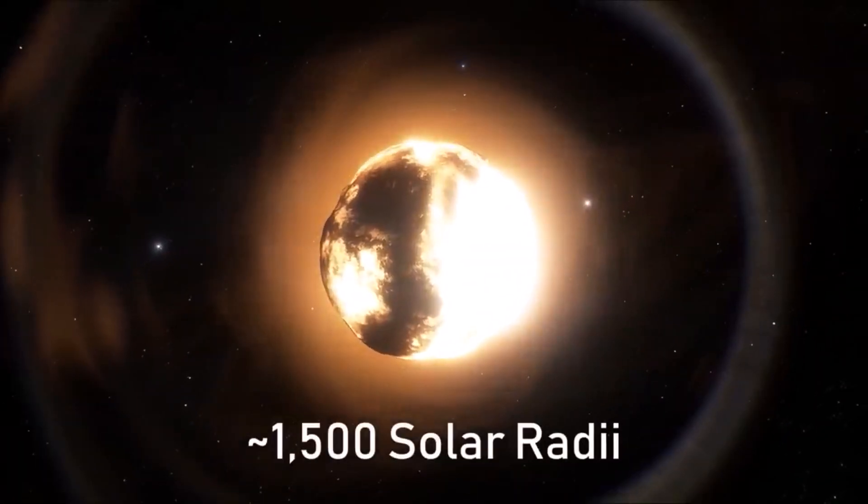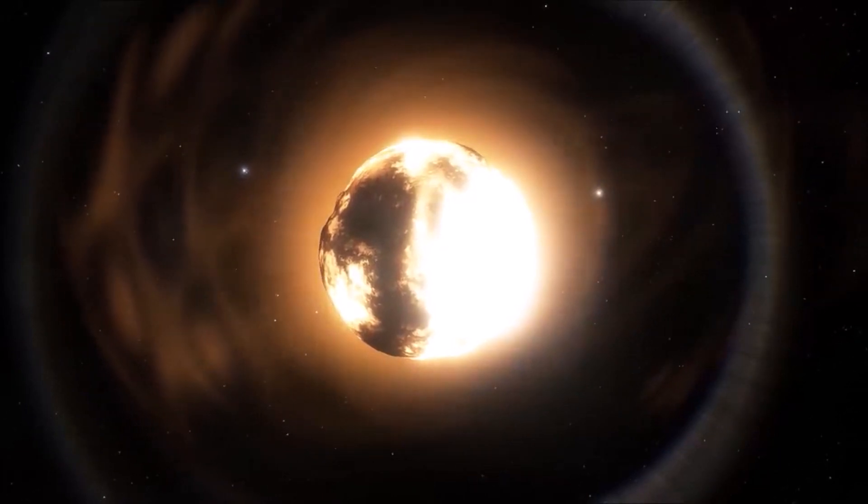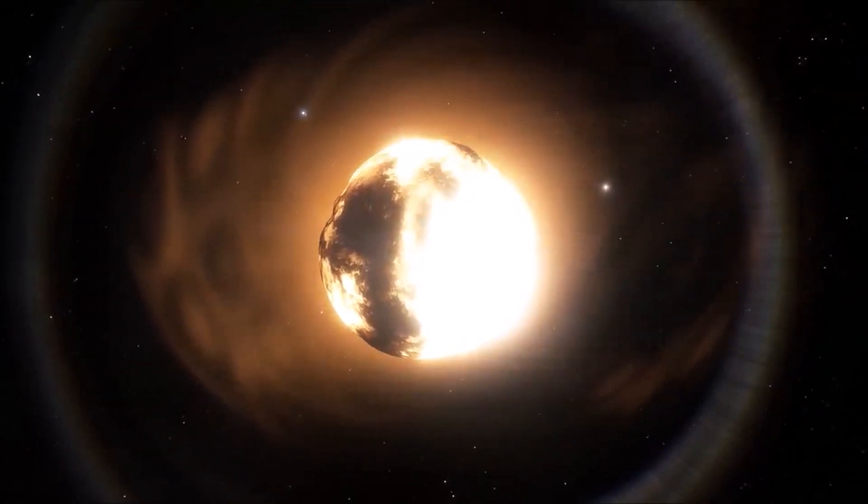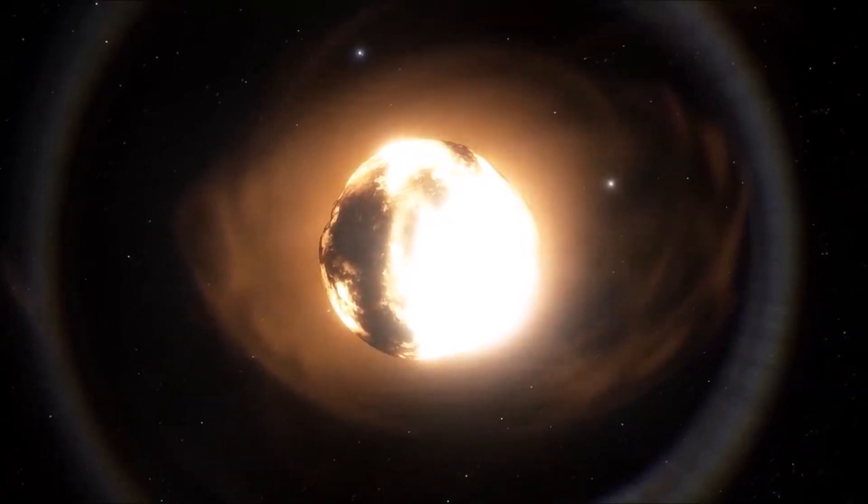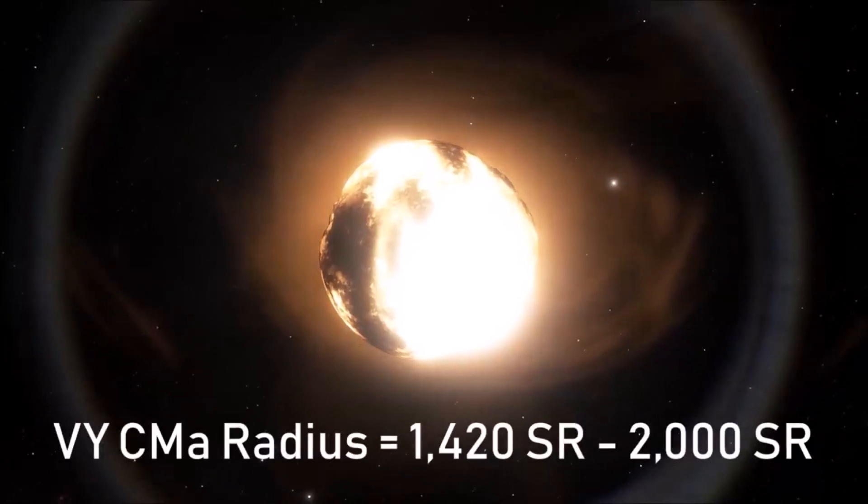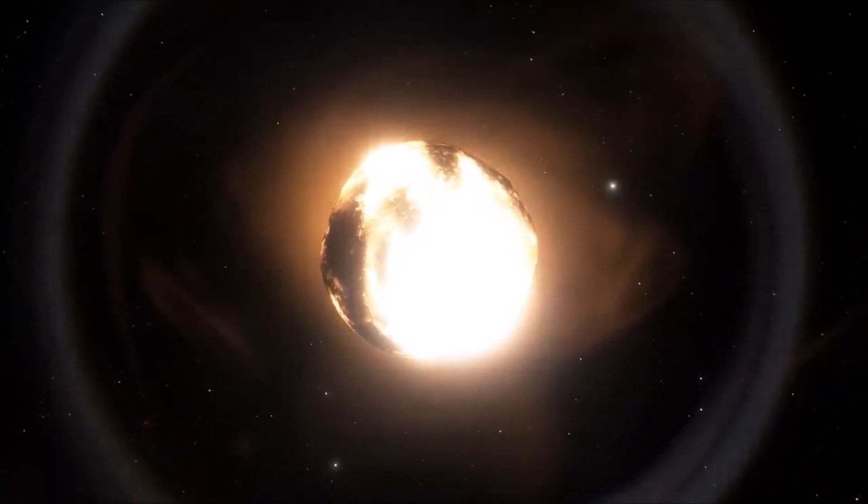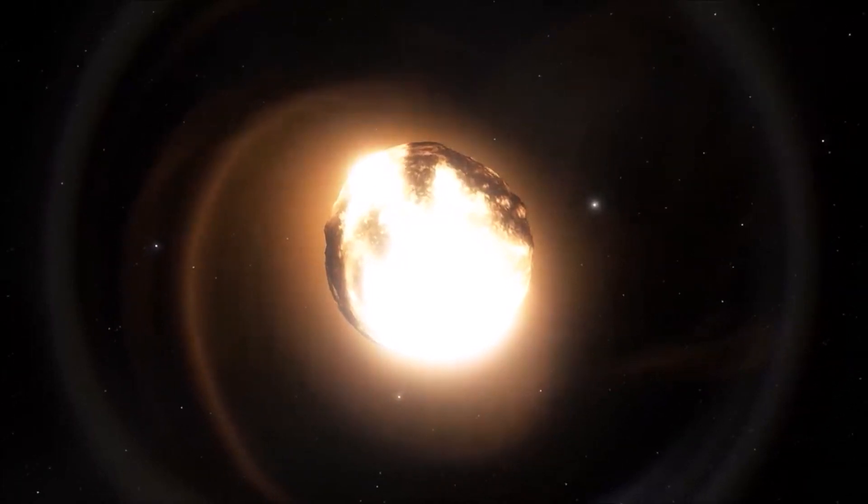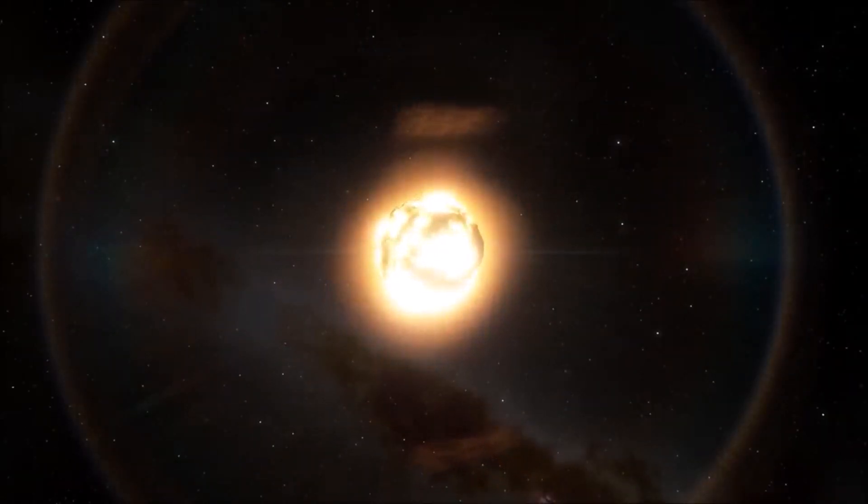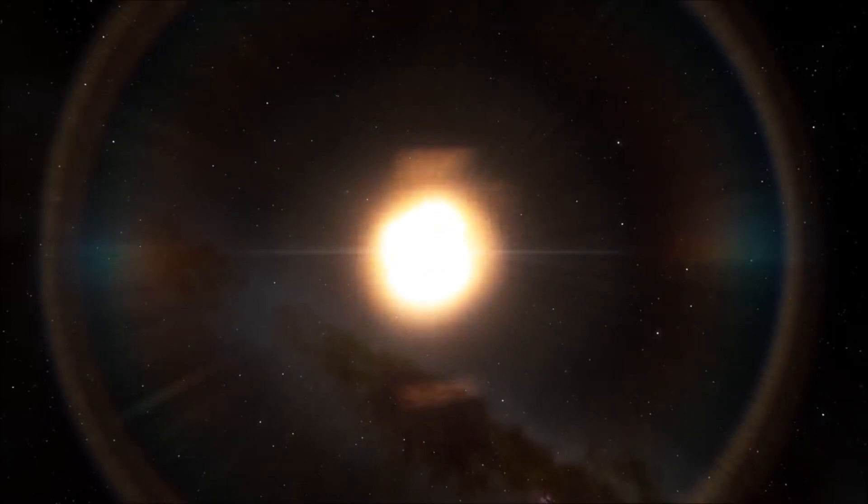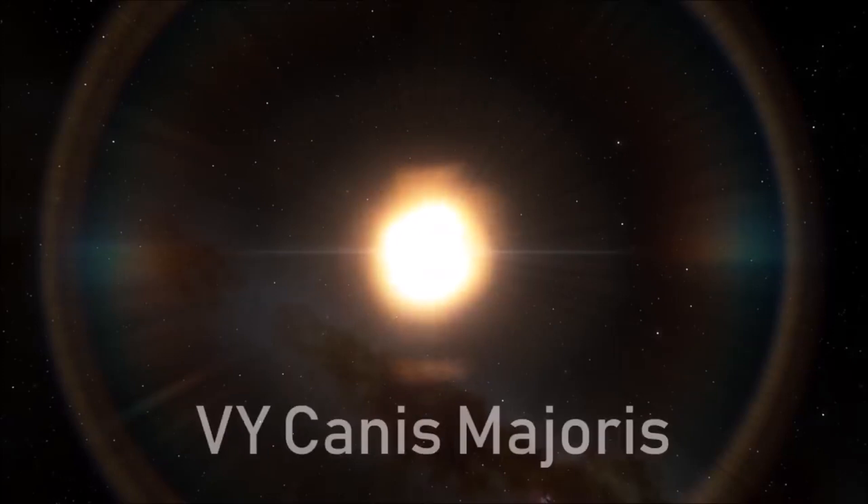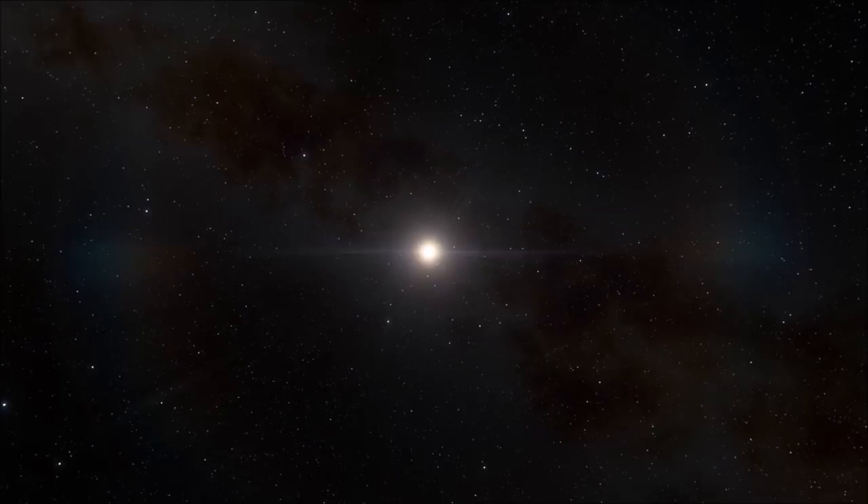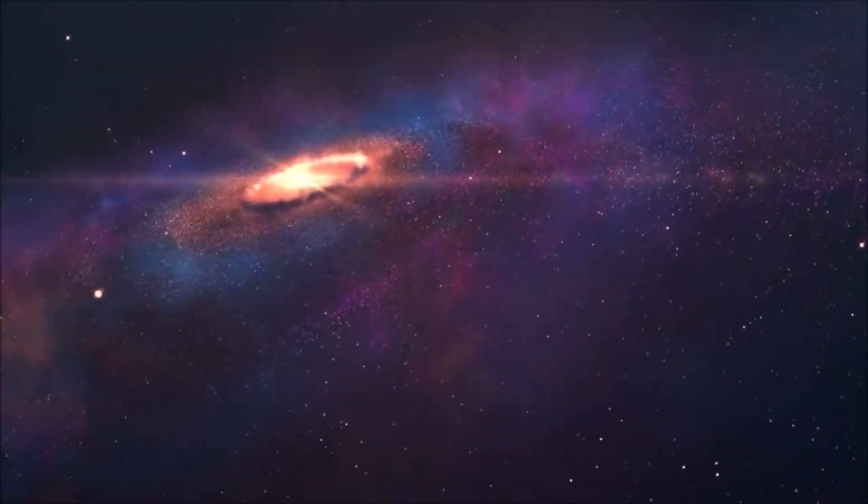VY Canis Majoris was the previous largest star and was well-known amongst the scientific community. We have refined our estimates in recent years, despite the fact that there were well-defined error margins. The star was initially estimated to be over 3,000 times the size of the Sun. However, this has been revised and now the range is between 1420 solar radii to 2000 solar radii. VY Canis Majoris' radius is likely to be closer to 1,500 solar radii than the 2000 solar radii estimate. UY Scuti is estimated to have a radius of approximately 1708 solar radii. Even at the lower estimate, the red Hypergiant is larger than 1,500 times the Sun.